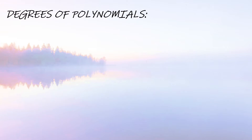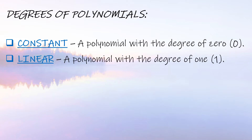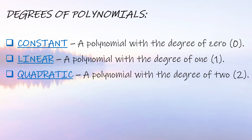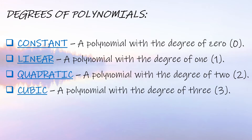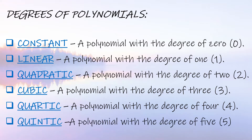Before that, let us first recall the degrees of polynomials. A constant is a polynomial with a degree of zero. Linear is a polynomial with a degree of one. Quadratic is a polynomial with a degree of two. Cubic is degree three, quartic is degree four, and quintic is a polynomial with a degree of five.